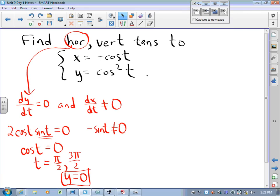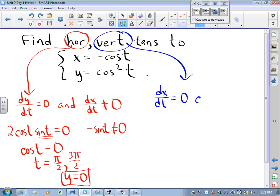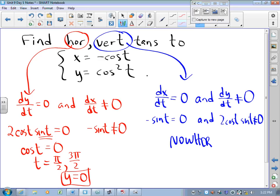Go the other way. Vertical tangents are places where dx/dt is 0 and dy/dt is not 0. So I'm looking for negative sine t to equal 0 and 2 cosine t sine t not to be 0, but that never happens. There are no vertical tangents.